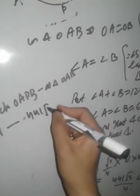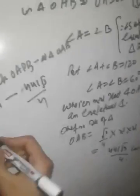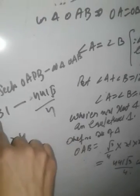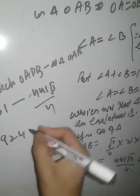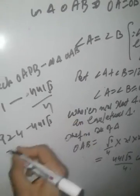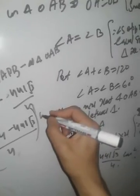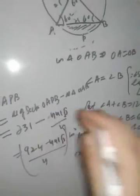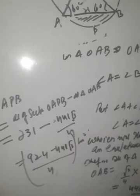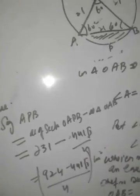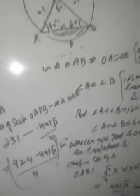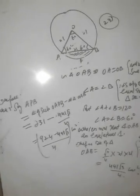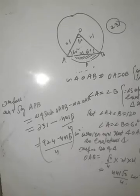Now, area of segment = area of sector OAPB minus area of triangle OAB, which equals 231 minus 441√3/4 square centimeters. So the area of segment is (231 − 441√3/4) square centimeters. I hope you will get it. If you still have any question or doubt, please let me know. Thank you, class.